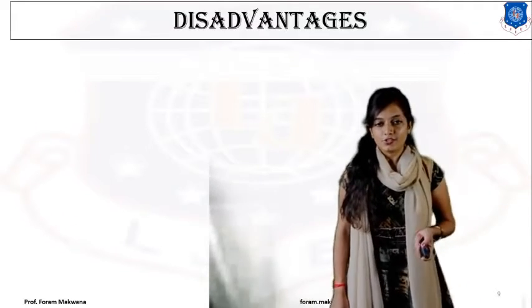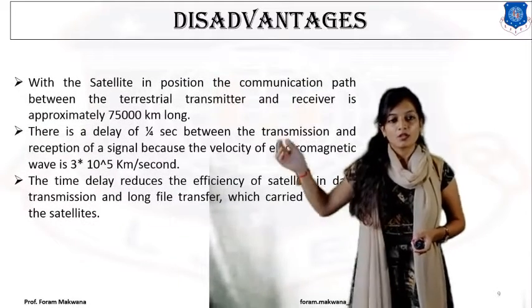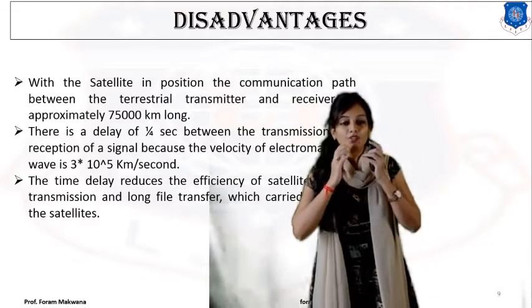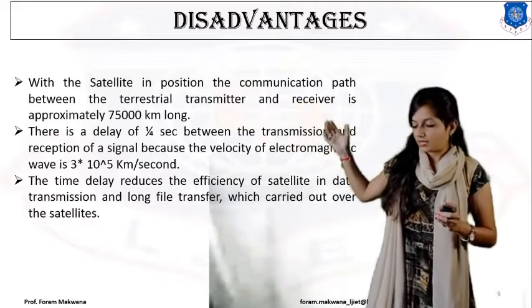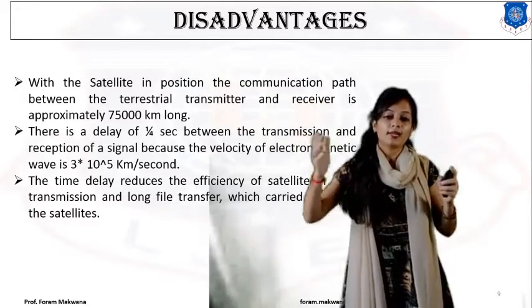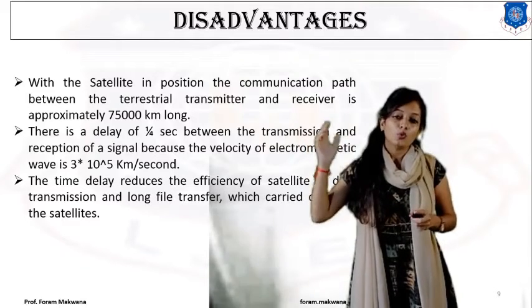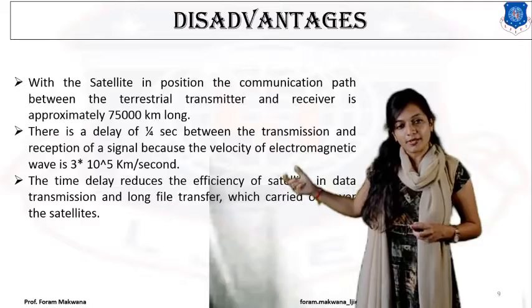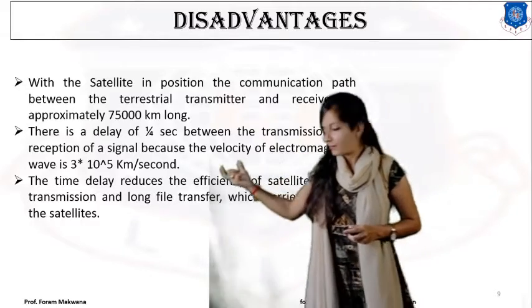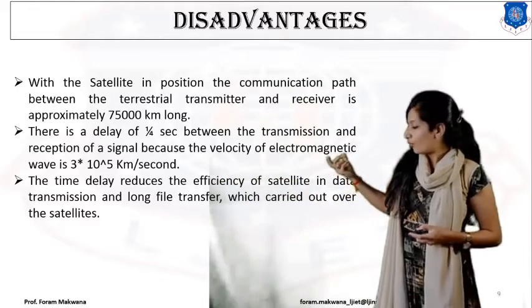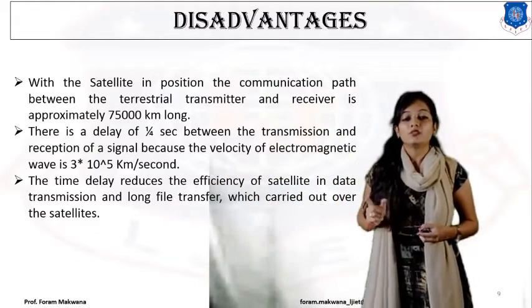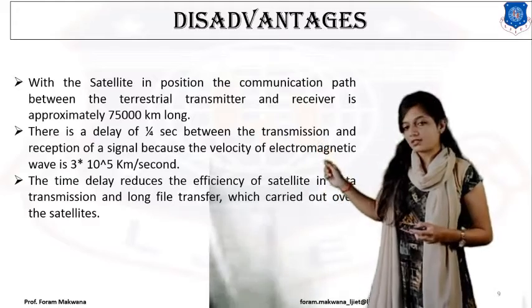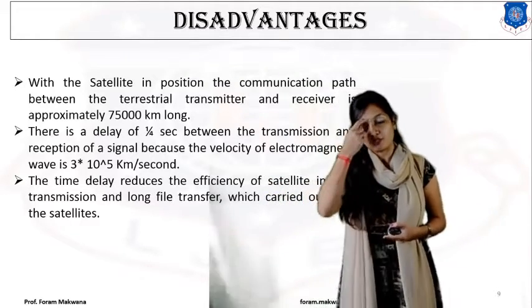As it has advantages, it also has disadvantages. First, with the satellite in position, the communication path between a terrestrial transmitter and receiver is approximately 75,000 kilometers. So there is a delay between transmission and reception of the signal, because the velocity of an electromagnetic wave is 3×10⁸ meters per second. Based on that, there is approximately a one-quarter second delay between transmission and reception.